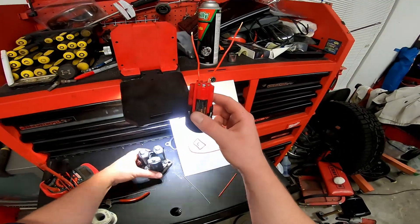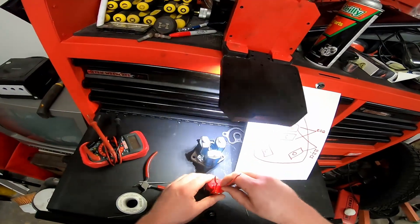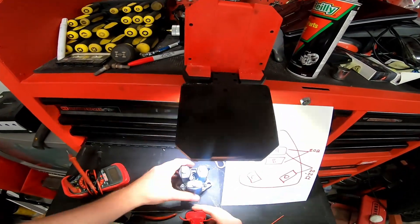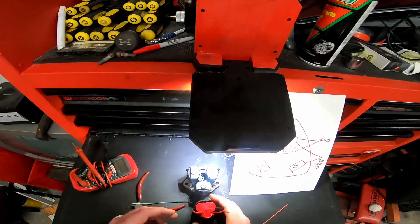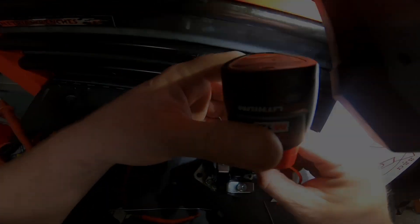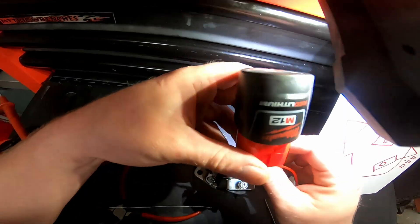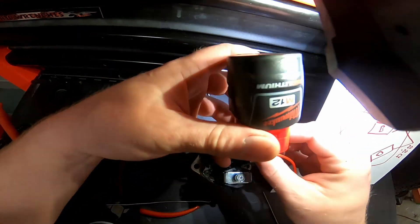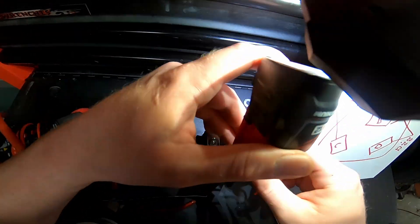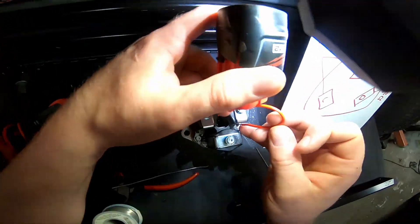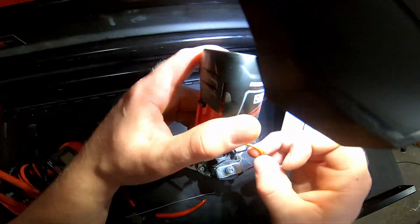Now the third test you're going to want to do, I have a 12 volt drill battery here. You could use the car battery or you could even use a 9 volt. But what you want to do, you want to go from the A terminal with the positive and ground all of the other terminals and you should hear a pretty good click.